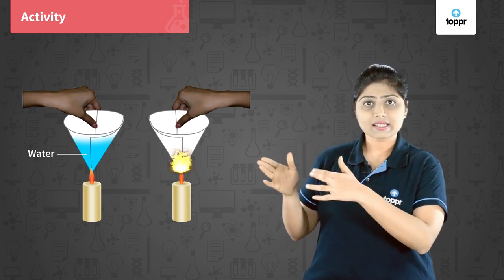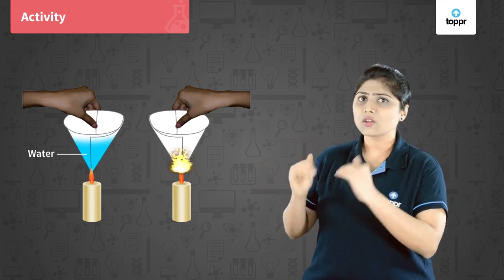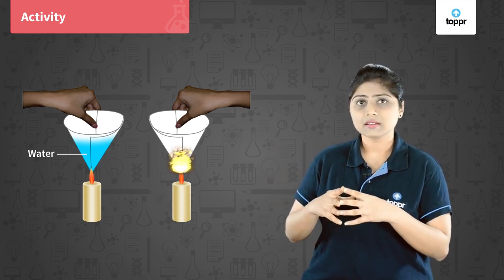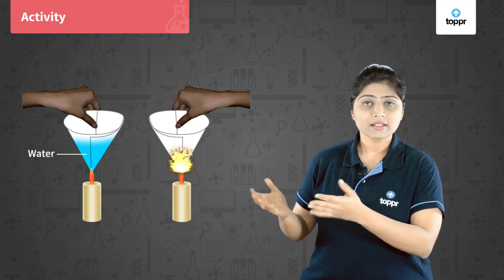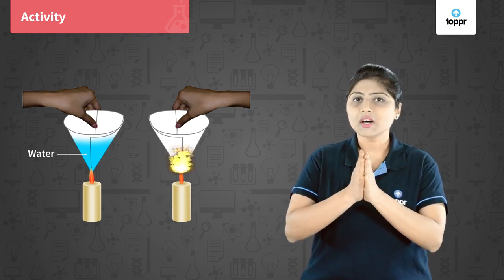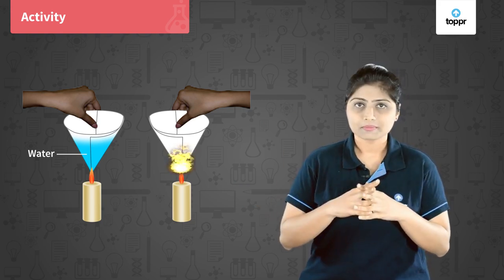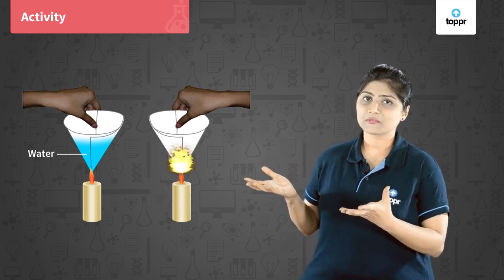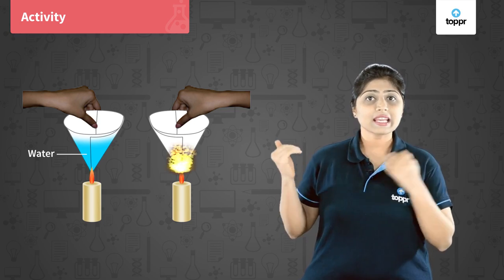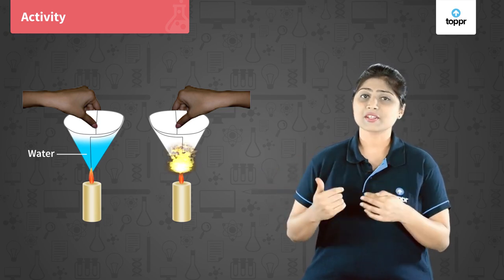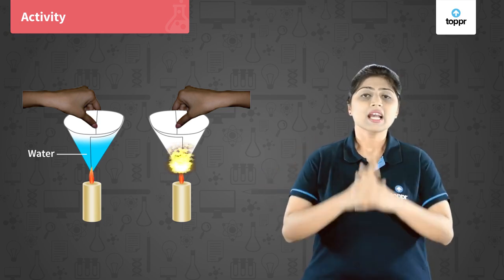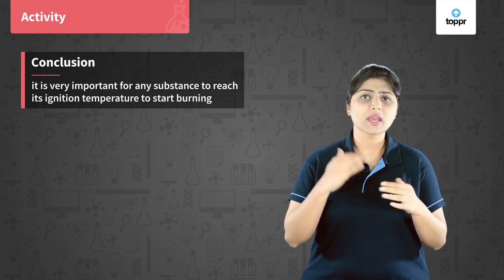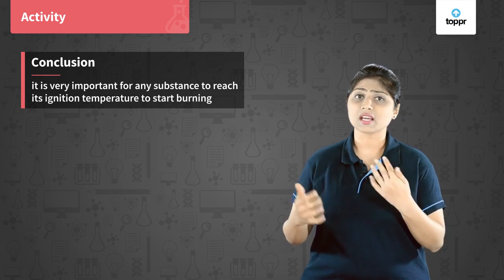But in the second case, the cup with water has not reached its ignition temperature even though we are still supplying heat to it. Where is that heat going? That heat is being transferred to the water in the cup, due to which the paper cup does not catch fire because its ignition temperature has not been met. This activity clarifies that ignition temperature is very much essential for a substance to start burning — it is the third requirement for combustion.